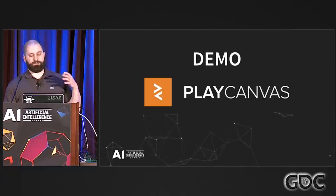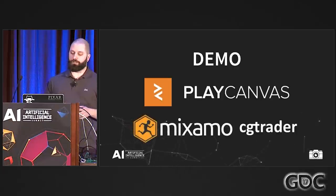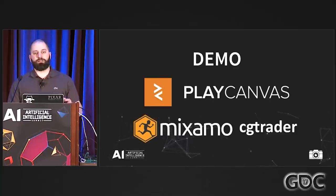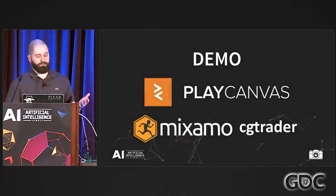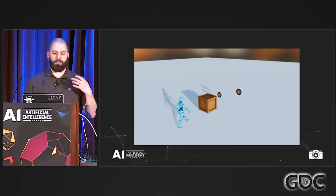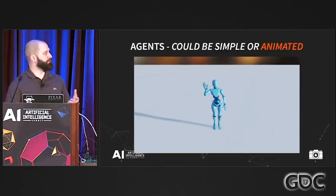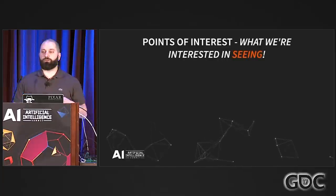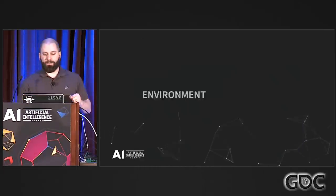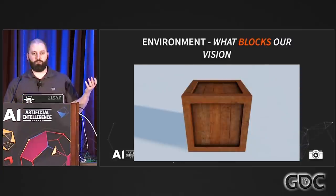I'll be showing a quick demo built with PlayCanvas — an HTML5 WebGL rendering framework — with assets from Mixamo and CGTrader. My goal was to show that within a few hours you can build something simple and easy to understand that shows off what a sensor system can be. We'll be using animated agents because most games use humanoid characters, points of interest representing what we're trying to see in the world, and for the environment, I use a crate because most games have crates.